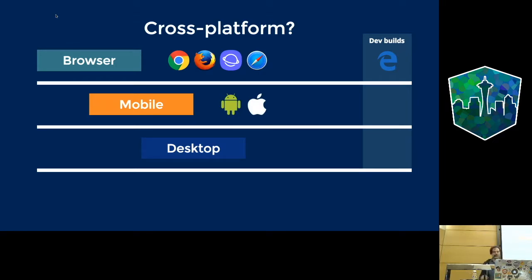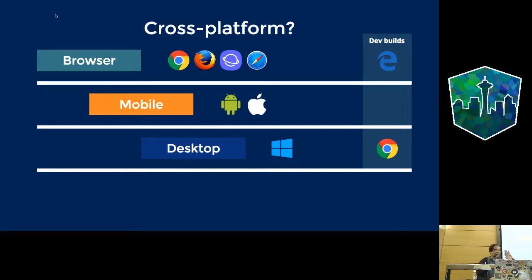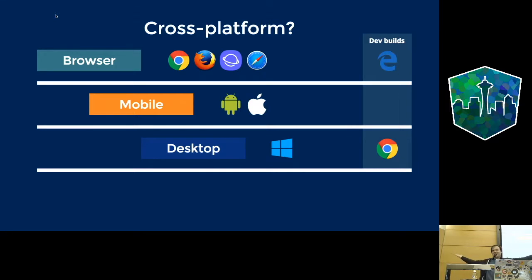On mobile, both main platforms are there — Android and iOS. On desktop, Microsoft are pioneers: they already have Progressive Web Apps as first-class citizens on their Windows 10 platform, so you don't need Electron anymore to wrap your web app to run it natively. Chrome OS is also there — at least it was in the Canary channel, and maybe by now it's already in production.